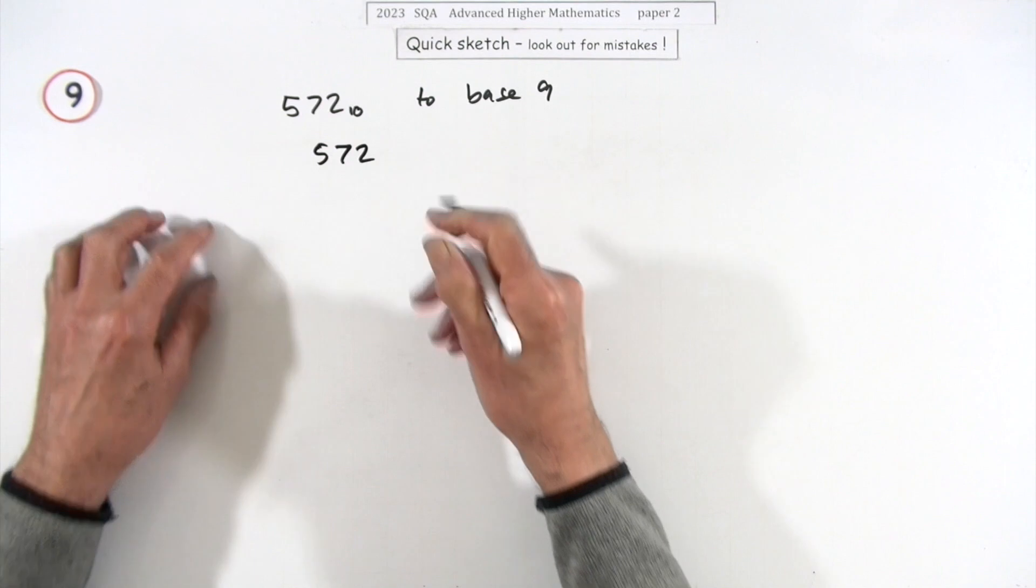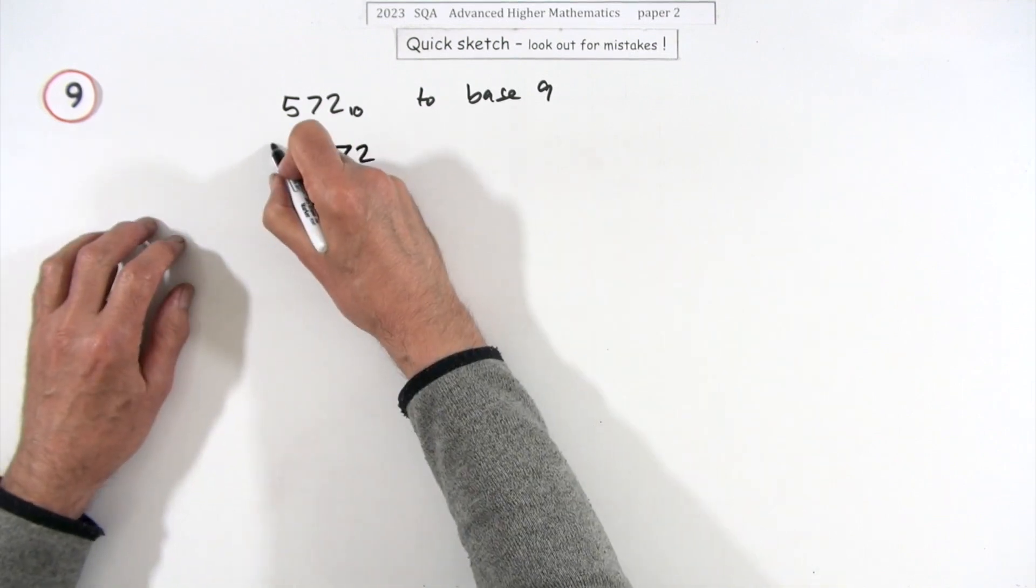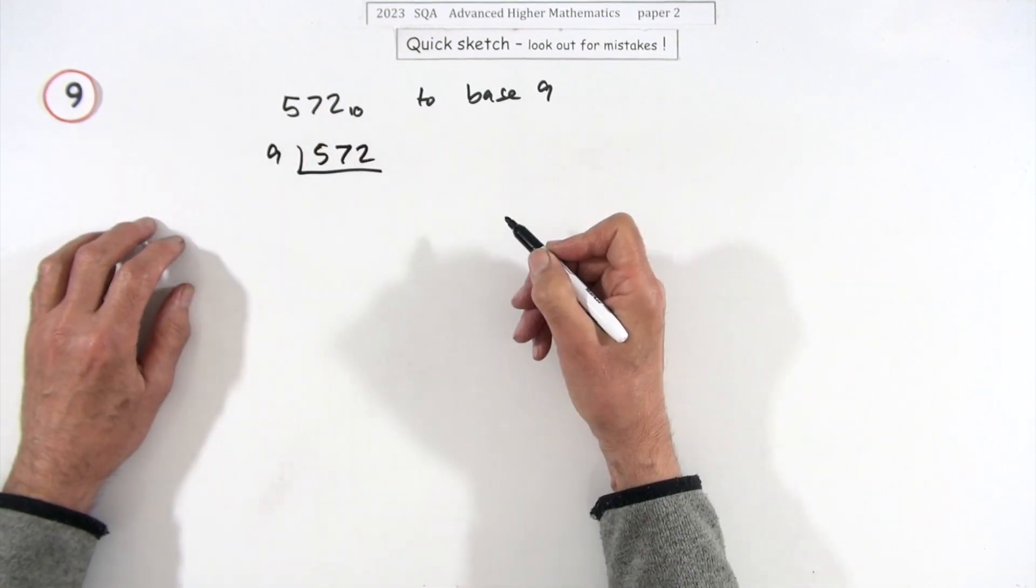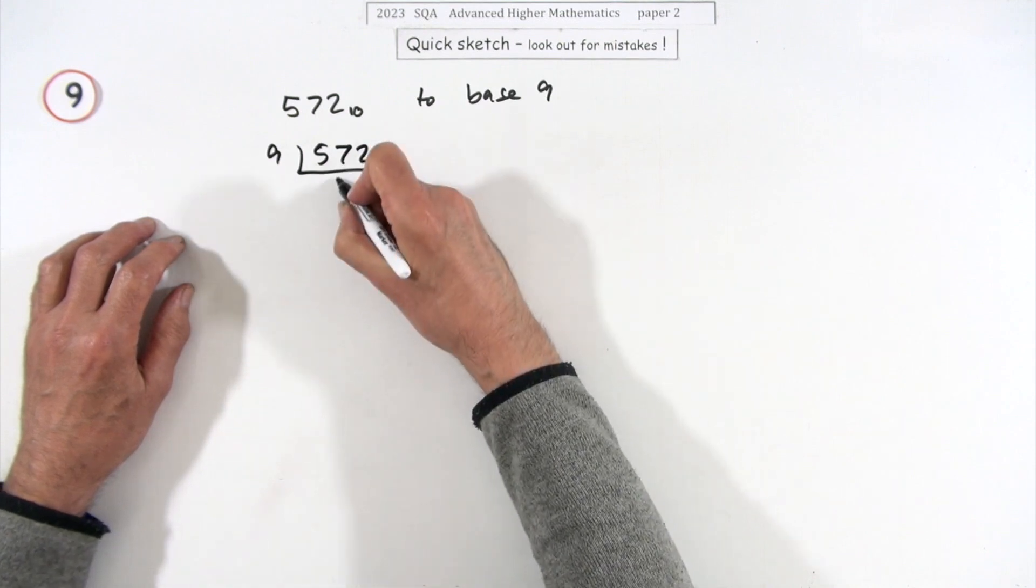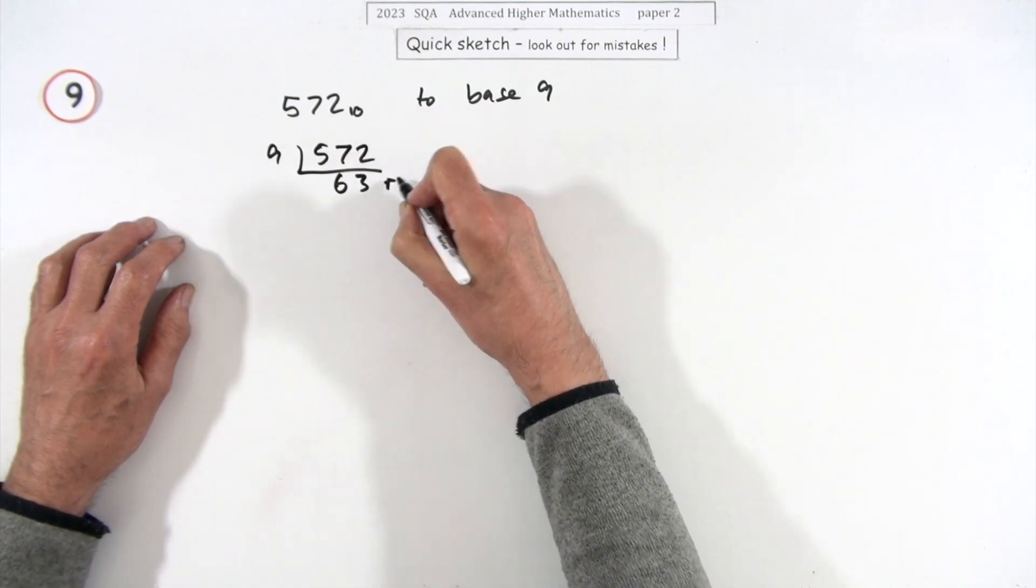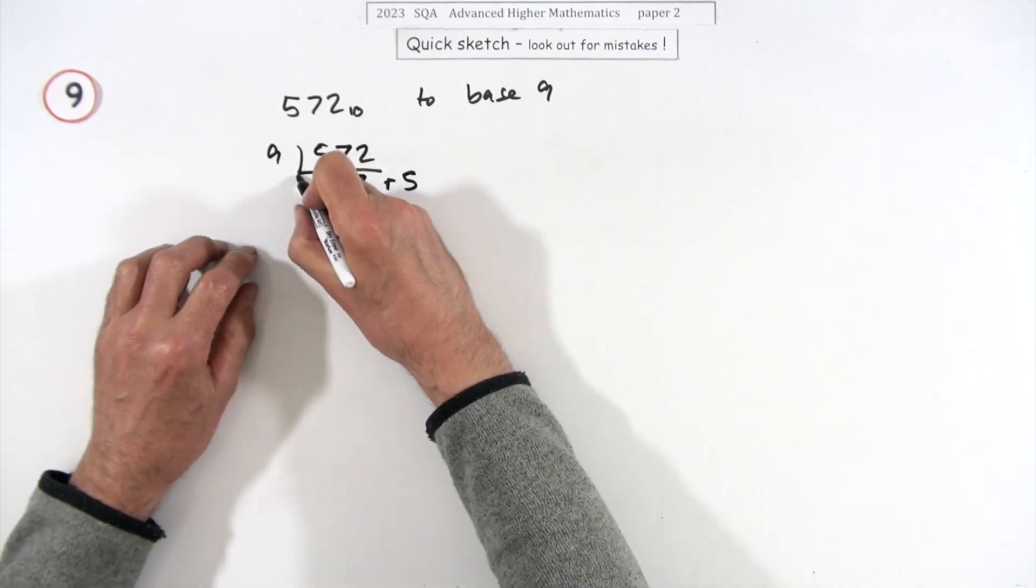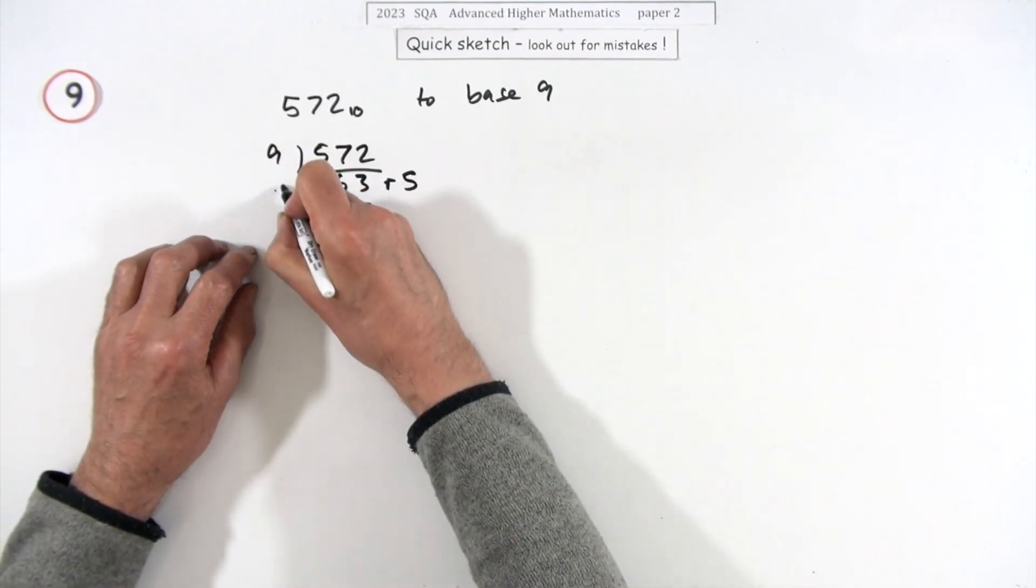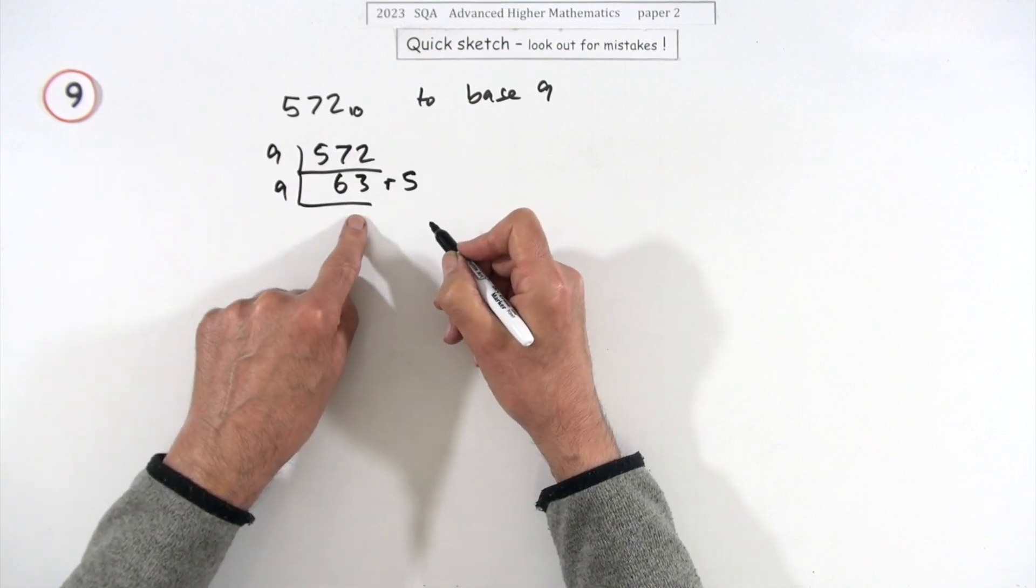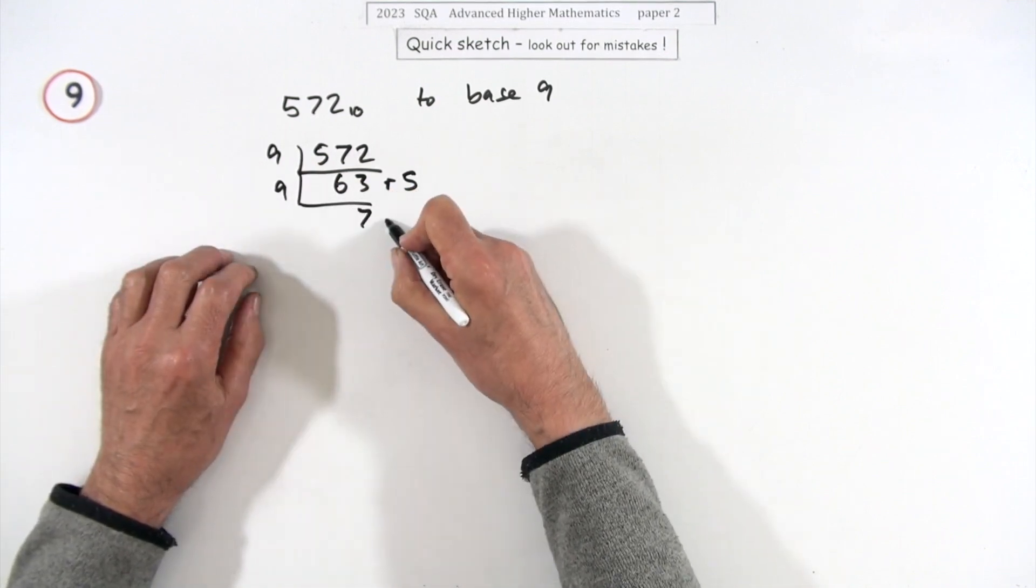If you had 572 things sitting there, how many bundles of nine could you make from that? Well, that would be 63 with 5 left over. You could have 63 bundles of nine, 5 left over. Now see these bundles of nine - how many bundles of nine you could make? That'd be exactly 7 with none left over.